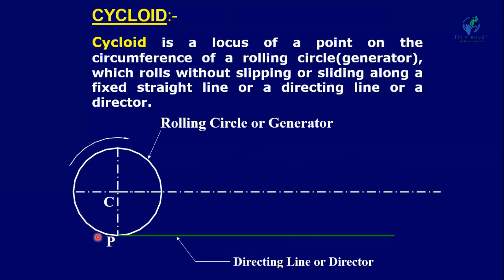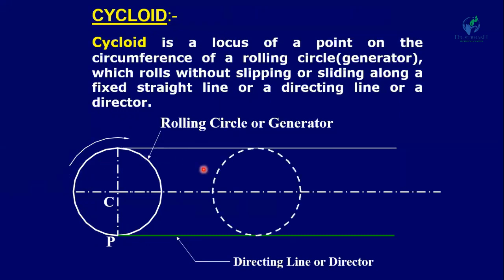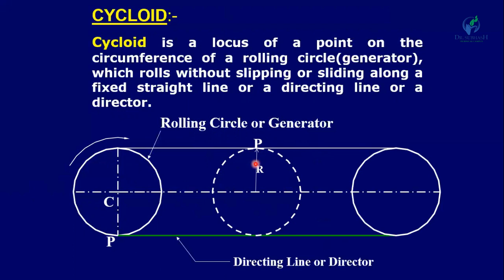This circle is rolling on the directing line in the clockwise direction. After one half revolution, the circle will reach a new position, and the point P on the circumference will reach the top. For the next one half revolution, point P will come back down. After one complete revolution, the center reaches its final position and the path traced by point P is known as a cycloid curve.